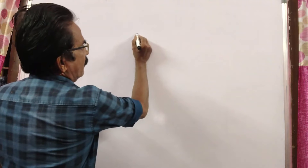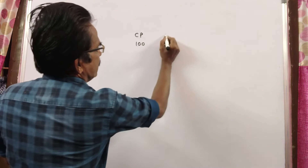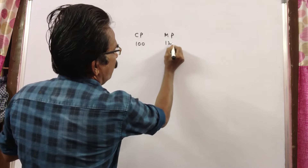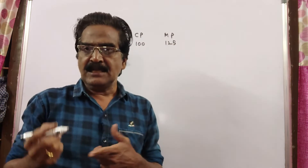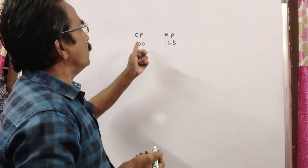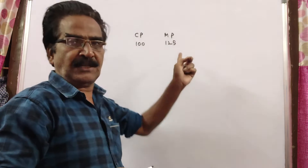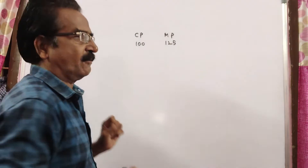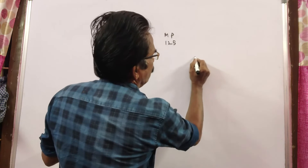If cost price is 100, then market price is 125, because he marks his goods 25% above the cost price. So cost price 100, market price 125, and he allows a discount of 12%. So 12% of 125...